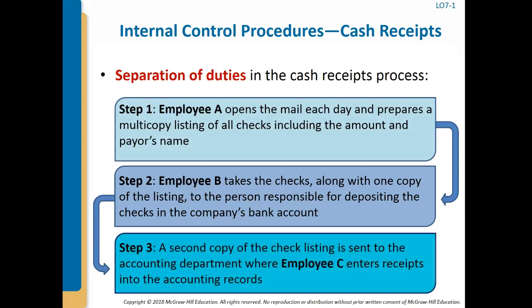As cash is the most liquid of all assets, a well-designed and functioning system of internal control must surround all cash transactions. Separation of duties is critical. Individuals that have physical responsibility for assets should not also have access to accounting records. Employees who handle cash should not be involved or have access to accounting records, nor should they be involved in the reconciliation of cash book balances to bank balances. Most non-retail businesses receive payment for goods by check received through the mail.